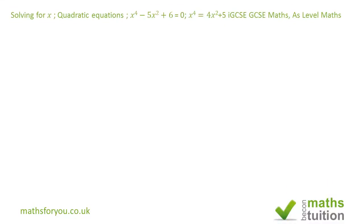Hello and welcome to this exercise in solving x from quadratic equations. This is an IGCSE-type question, also suitable for higher tier GCSE mathematics and the earlier stages of AS level mathematics. We want to solve x to the power 4 minus 5x squared plus 6 equals 0.